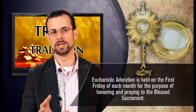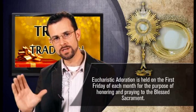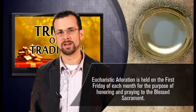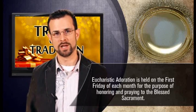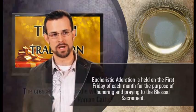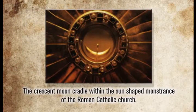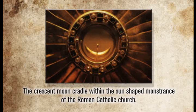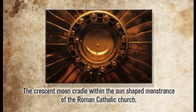Look very carefully on the right-hand side — you can see the crescent moon shaped holding that sun, or that wafer of bread. Here's a close-up: the crescent moon cradle with the sun-shaped monstrance of the Roman Catholic Church. You'll see that the rays of the sun go all the way around this. They didn't hide it at all. Why? Because this is thousands of years old — it comes right out of paganism and sun god worship, where it was the symbol of Baal and his wife Ishtar.